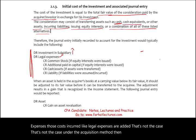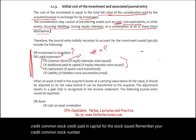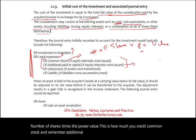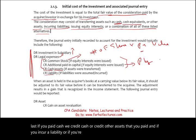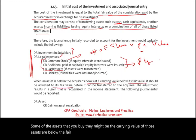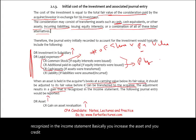If you issue stocks, you credit common stock for the number of shares times the par value, and additional paid-in capital is the plug — computed last. If you paid cash, you credit cash or other assets transferred. If you assumed or incurred a liability, you credit that liability. If some assets being transferred have a carrying value below fair value, they are adjusted to fair value before transfer, with the adjustment recognized in the income statement as a gain on asset revaluation.